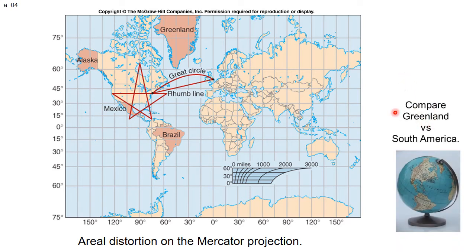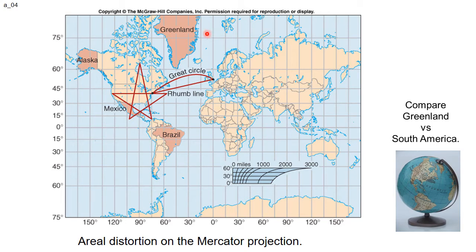This is the famous Mercator projection — named after the cartographer Gerardus Mercator, it rhymes with 'potato.' It's a fairly straightforward projection and was used a lot for navigation. The Mercator projection has been much maligned in education because it has so much aerial distortion in the high latitudes. Greenland looks to be larger than South America, when in actuality Greenland is less than a tenth the size of South America, as you can verify on a globe.